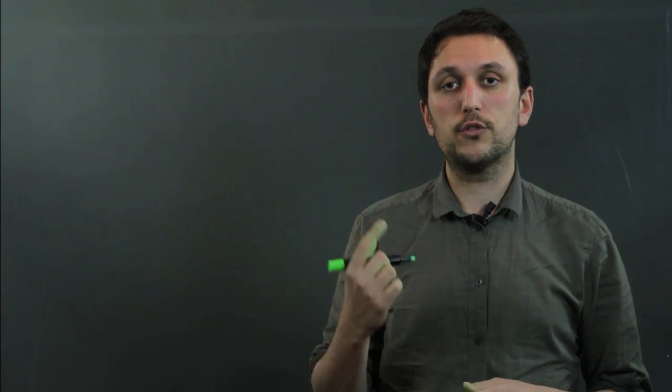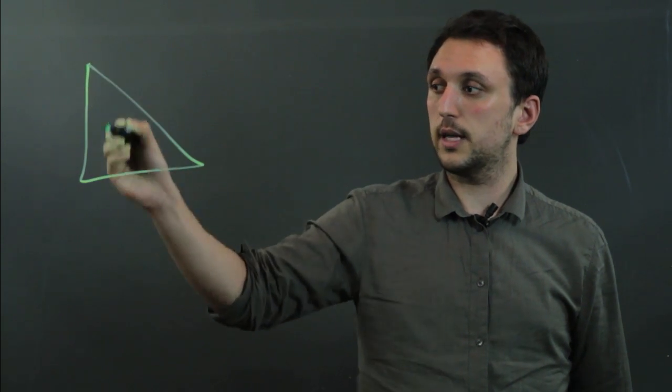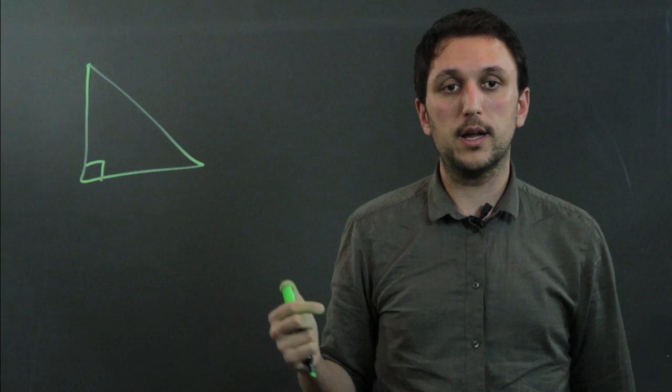Now, a right triangle is a triangle in which exactly one angle is 90 degrees. So, like this. This would be a right triangle.